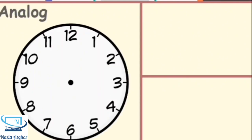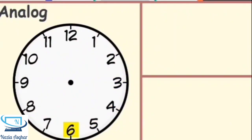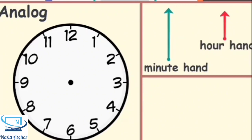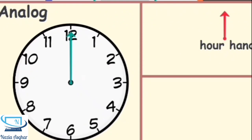This is called an analog clock. As you can see, there are the numbers 1 through to 12 on the clock face. An analog clock has two hands. We call the long hand the minute hand, and we call the short hand the hour hand.